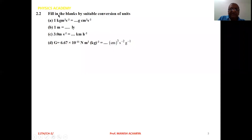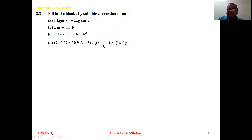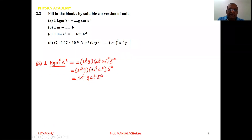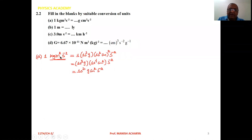Example 2.2: fill in the blanks by suitable conversion of units. One kilogram meter square per second square is how much gram centimeter square per second square? One meter is how much light year? Three meter per second square is how much kilometer per hour square? G that is 6.67 into 10 raise to minus 11 newton meter square per kilogram square is equal to how much centimeter cube second raise to minus 2 gram raise to minus 1? Now let's discuss one by one.